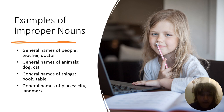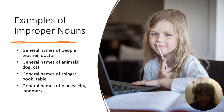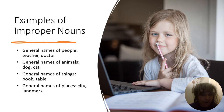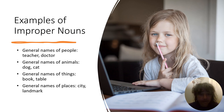Here are some examples of improper nouns. General names of people, like if you call your teacher just 'teacher' rather than her actual name, or if you go to see a doctor but you don't say what the doctor's name is. Or just saying the word 'dog' or 'cat.' Or if you identify what an item is, like a book or a table. Or general names of places, like 'I'm going into town,' 'I'm going to the city,' or 'Did you see that landmark?'